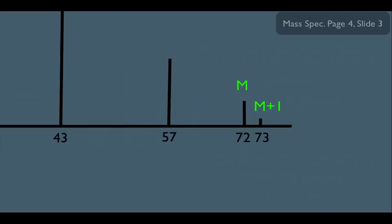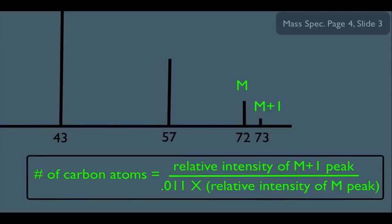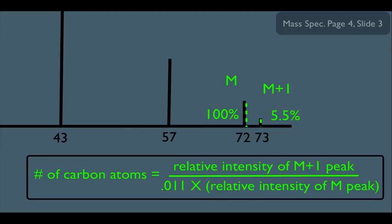Because of this fact, there's a useful equation: the number of carbon atoms equals the relative intensity of the M-plus-1 peak divided by 0.011 times the relative intensity of the M peak. This means we can use the M and M-plus-1 peaks to figure out the number of carbons in our sample. For example, if the M peak is 100% and the M-plus-1 peak is 5.5% relative to it, then the numerator is 5.5%.